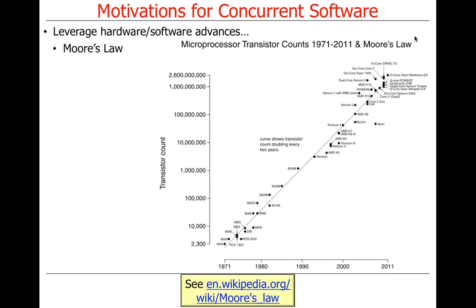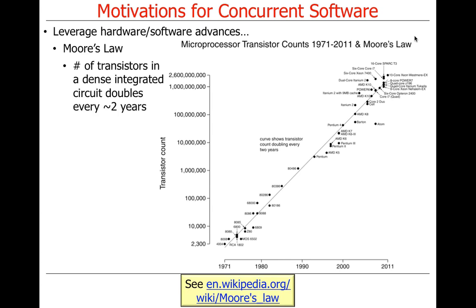One obvious commodity that's been around for a long time is Moore's Law. What does Moore's Law say? The number of transistors in a dense integrated circuit doubles approximately every 18 months to two years. It is pretty amazing if you take a look at how this has taken place over time.